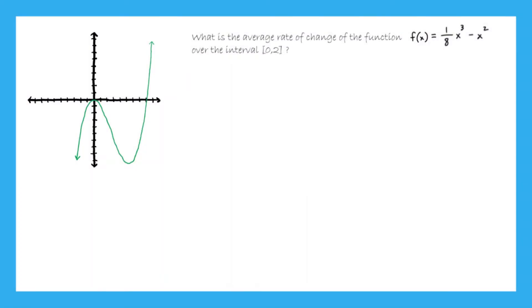So we are asked the question, what is the average rate of change of the function f(x) equals 1 over 8 x cubed minus x squared over the interval from 0 to 2.